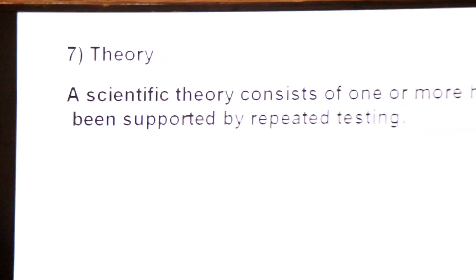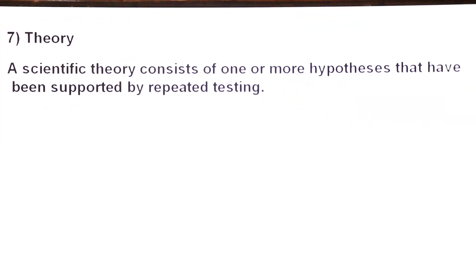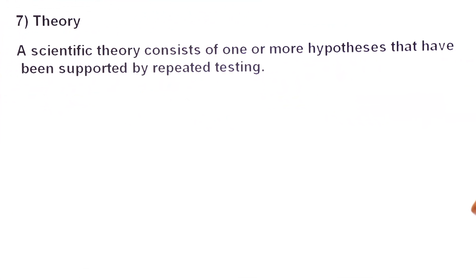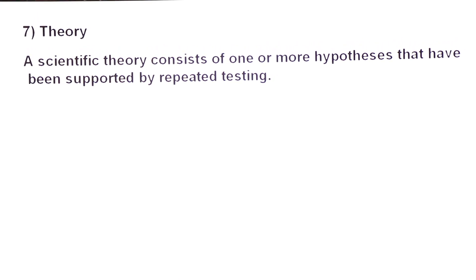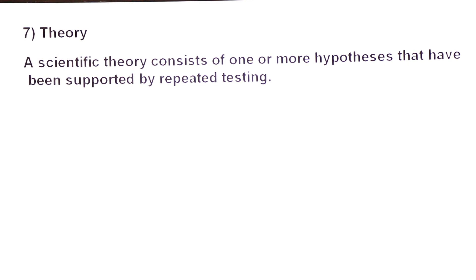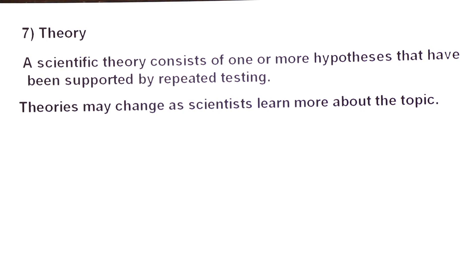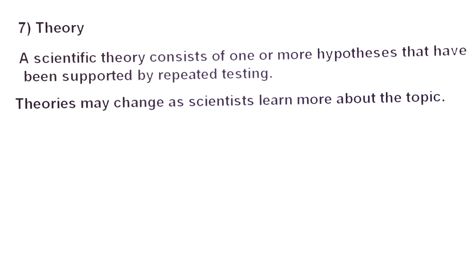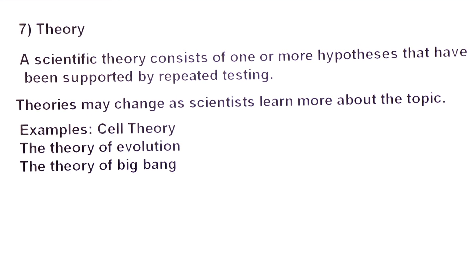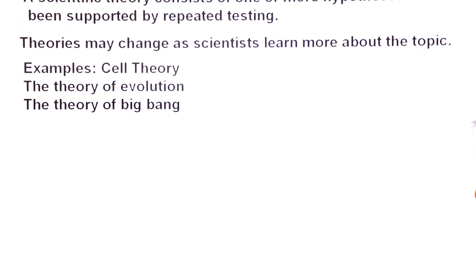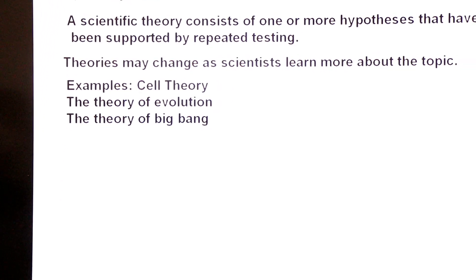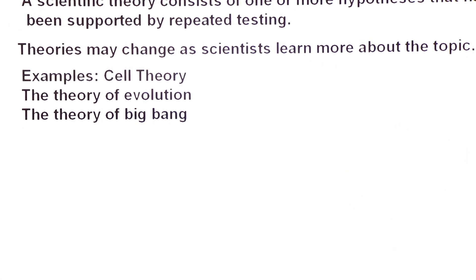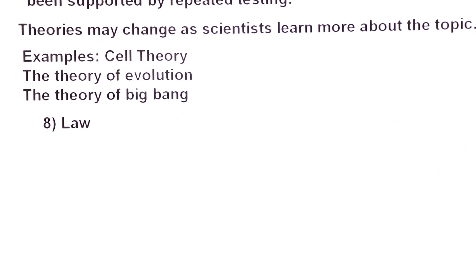After conclusion, we come to theory. A scientific theory consists of one or more hypotheses that have been supported by repeated testing. When a hypothesis is tested repeatedly on the basis of evidence, it becomes a theory. Theories may change as scientists learn more about the topic. Examples include cell theory, the theory of evolution, and the theory of the big bang. But when a theory is universally accepted, it becomes a law.